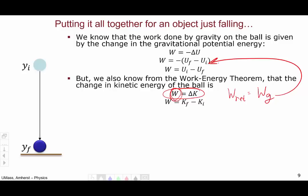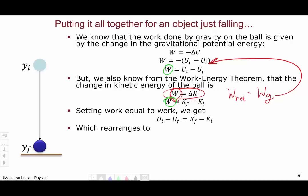Delta is again final minus initial. Now, if we go through and set this work equal to this work, we get this expression, which after rearranging gives us something that looks a little bit more interesting. ui plus ki equals uf plus kf.